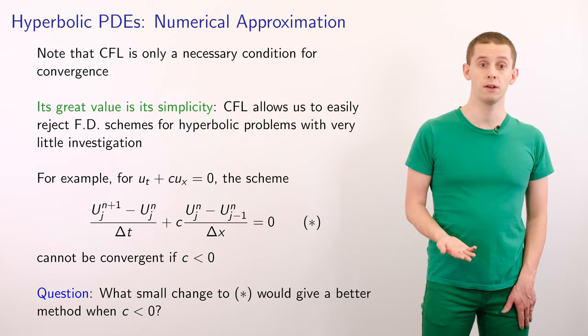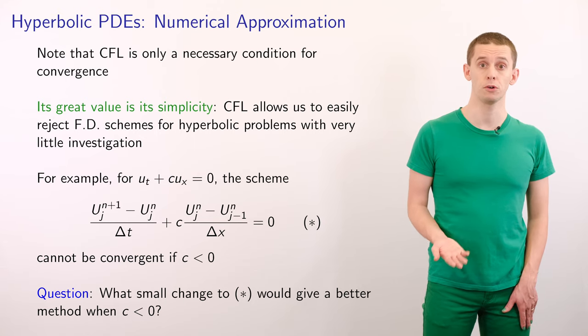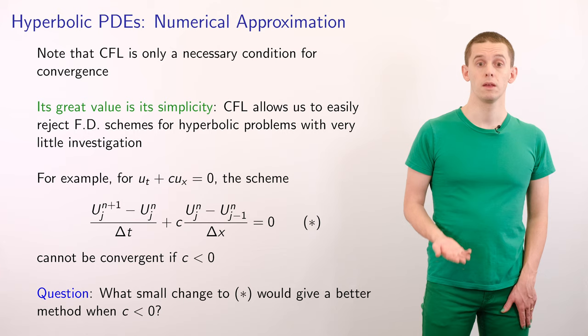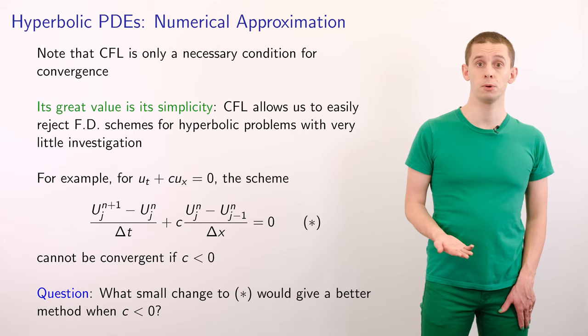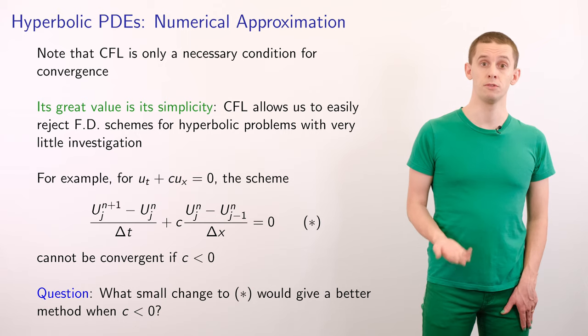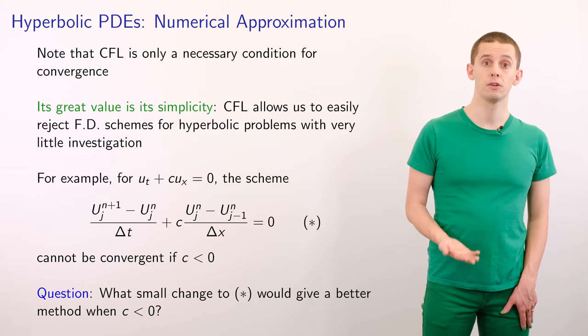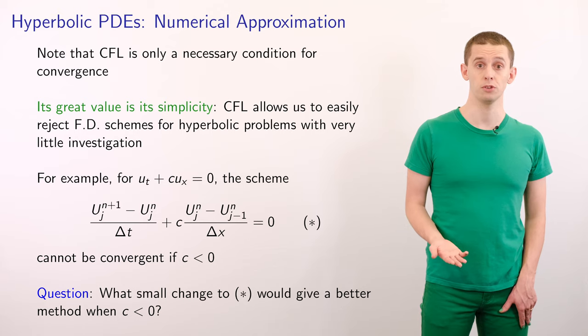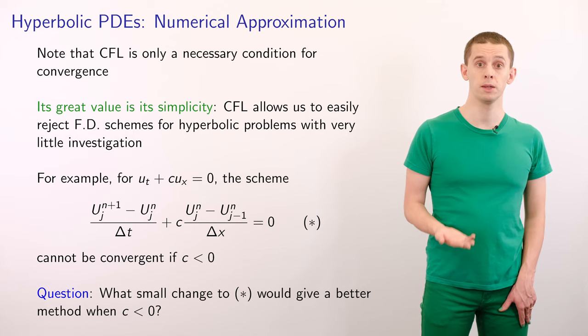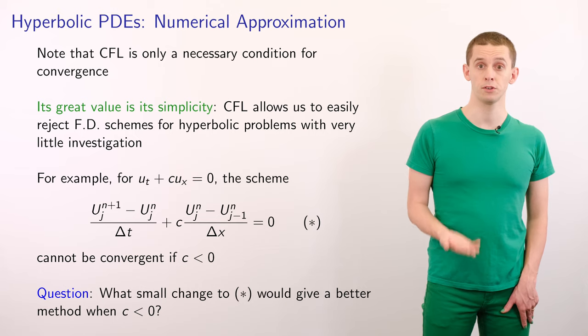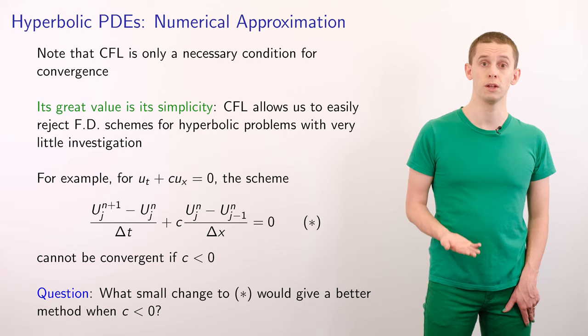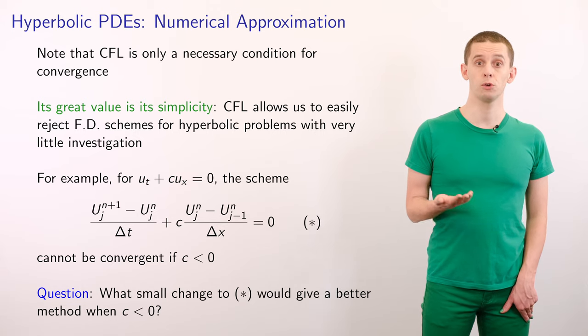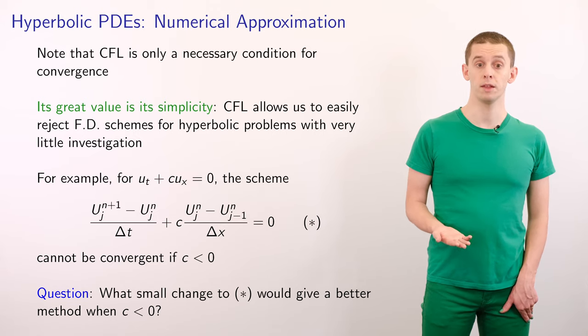Note, however, that the CFL condition is only a necessary and not sufficient condition for convergence. However, it has great value in practice due to its simplicity. And it allows us to easily reject possible finite difference discretizations with very little investigation. For example, suppose we look at our numerical scheme for u t plus c u x equals 0. Then this cannot possibly be convergent for c less than 0. Because as we saw, in that case the characteristics would lie outside of our numerical domain of dependence.